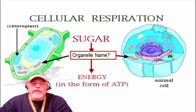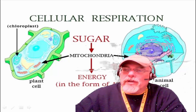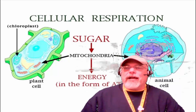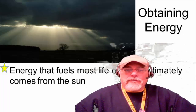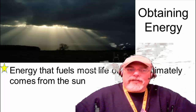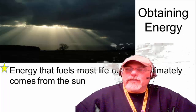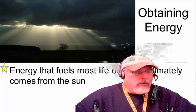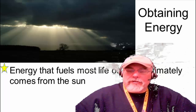One was the cytoplasm, but the other organelle is much more efficient at it. That organelle is called the mitochondria. One good way to remember that — if you think of 'mighty' as in power — mighty mitochondria. Energy that fuels most life on Earth ultimately comes from the sun. There are a few organisms that can obtain energy from the Earth itself, like some bacteria that use chemosynthesis.